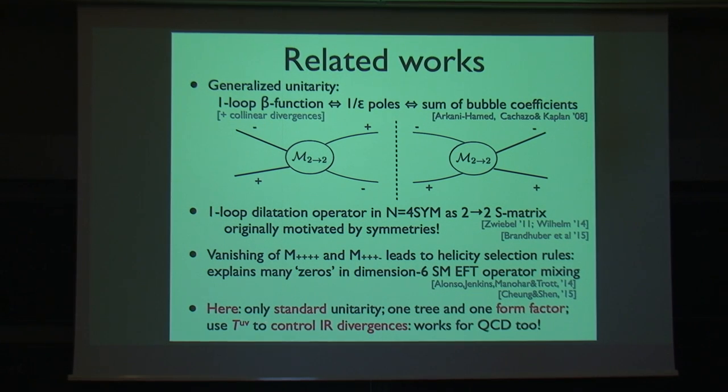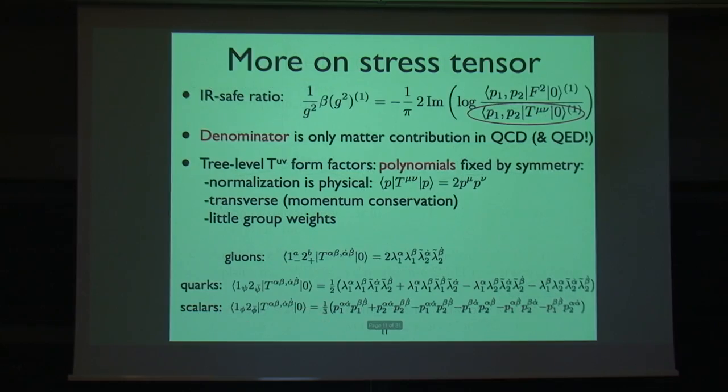What we're adding to this story is we're not going to use generalized unitarity. It's going to be plain standard unitarity, just the optical theorem that we used earlier. Instead of having a product of two amplitudes, it'll always be one amplitude on one side and a form factor on the other side. That makes the phase space integral much easier to do because the tree is basically a polynomial. The other improvement is that whenever people draw this kind of picture, you have to disentangle the ultraviolet and the infrared divergences. The trick is to use the stress tensor to control the infrared divergences, because the stress tensor doesn't have any ultraviolet divergences.